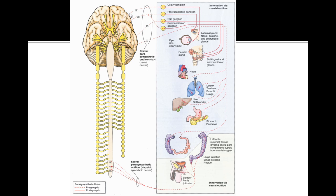Here's an easy way to distinguish whether the innervation is from the vagus nerve or another nerve. All viscera above the diaphragm is vagus nerve innervation. Below the diaphragm, there are three main organs. In the GI system, the entire small intestine is the vagus nerve. The large intestine has four sections: ascending, transverse, descending, and rectosigmoid. Divide the large intestine in half — the proximal half, which is the ascending and transverse, is the vagus. The distal half, which is the descending and rectosigmoid, is the pelvic splanchnic nerve.